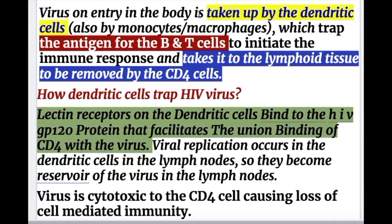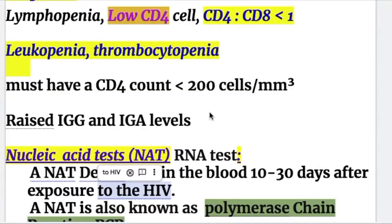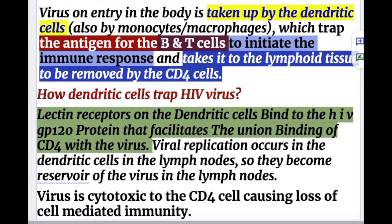On entry into the body, the virus is taken up by dendritic cells and also by monocytes and macrophages, which trap the antigen for B and T cells to initiate the immune response. They take the antigen to the lymphoid tissues to be removed by the CD4 cell.